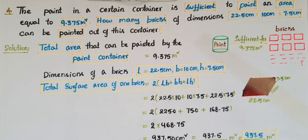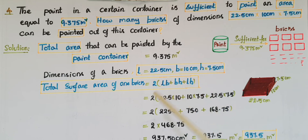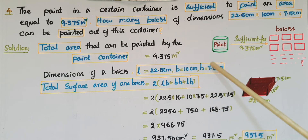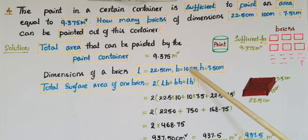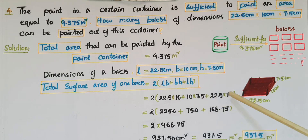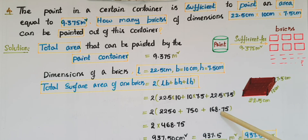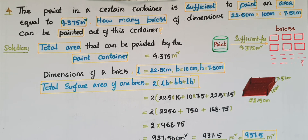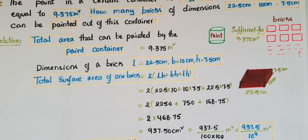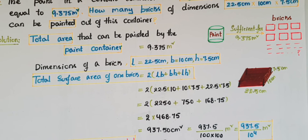First, find the total surface area of the brick. We know it is in the form of a cuboid, so the formula is 2(lb + bh + lh). That is equal to 2(22.5 × 10 + 10 × 7.5 + 22.5 × 7.5), which equals 2(225.0 + 75.0 + 168.75), which equals 2 × 468.75, which equals 937.5 cm².